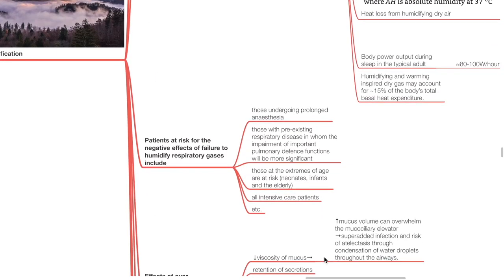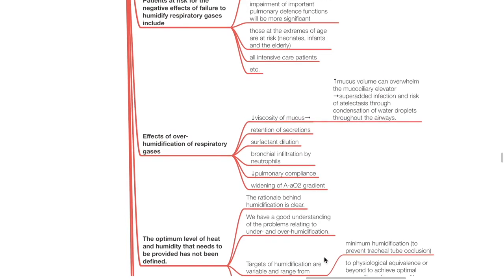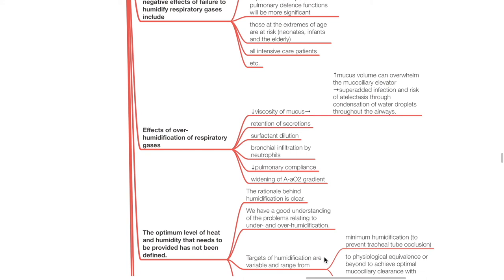Patients at risk for the negative effects of failure to humidify respiratory gases include those undergoing prolonged anesthesia, those with pre-existing respiratory diseases, those at extremes of age, and all intensive care patients. Effects of overhumidification include: reduction of viscosity of mucus, increased mucus volume, overwhelming of the mucociliary elevator, super-added infection and atelectasis due to condensation of water droplets, retention of secretions, surfactant dilution, bronchial infiltration by neutrophils, reduction in pulmonary compliance and widening of the A-a oxygen gradient.